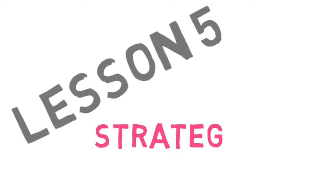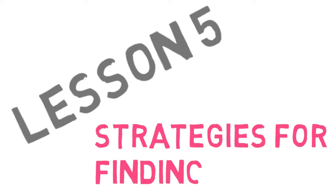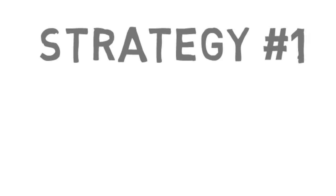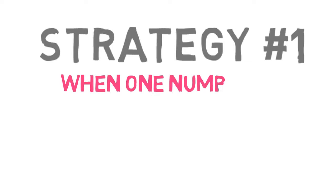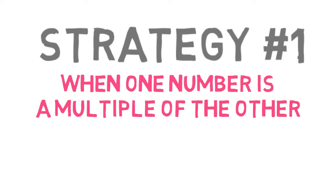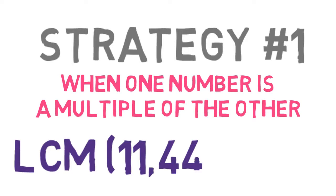Lesson 5: Strategies for Finding the LCM. One strategy for finding the LCM of two numbers is to notice whether one number is a multiple of the other. For example, suppose you want to find the LCM of 11 and 44.